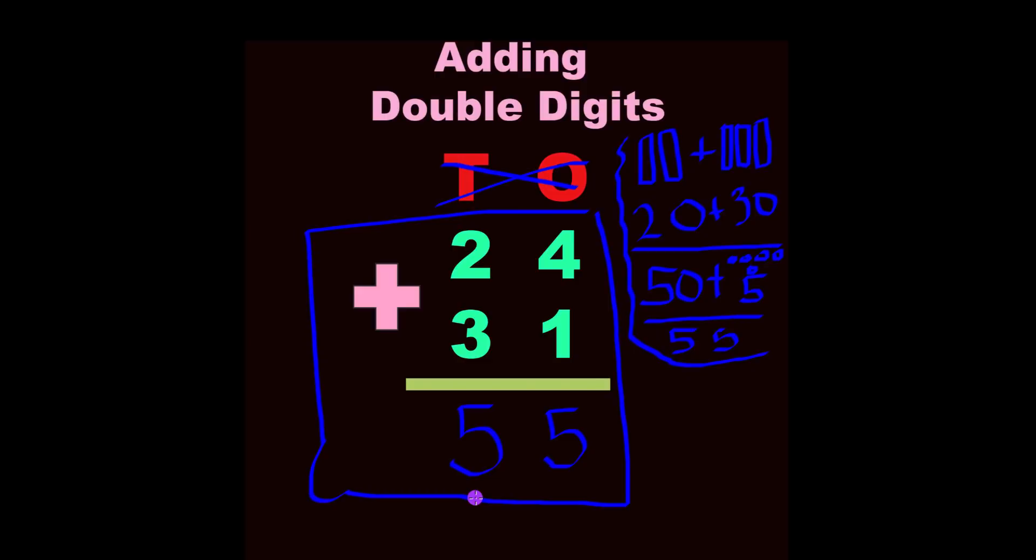But just when you don't have to regroup and carry ones, you are awesome. We'll just add the numbers straight down. 4 plus 1 equals 5, bring it down.